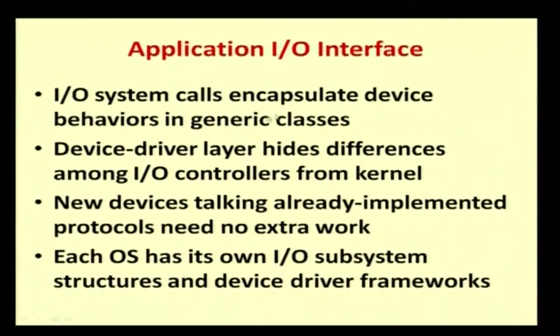Now let us see the Application to I/O Interface. An application is what we use. An interface is the communication channel between an I/O device — such as a keyboard — and the operating system present in the CPU. What is the communication channel between an input device and the operating system, or between the operating system and an output device? I/O system calls encapsulate device behaviors in generic classes. Device driver layers hide differences among I/O controllers from the kernel. The kernel is the nucleus of an operating system.